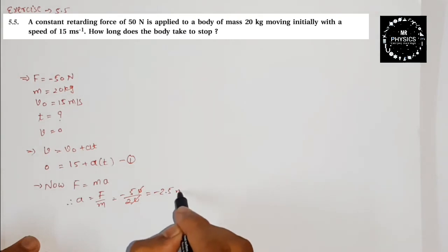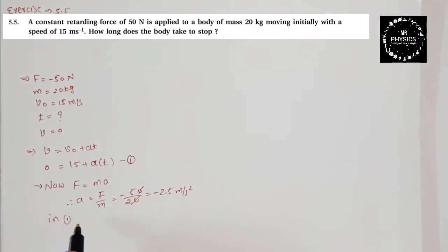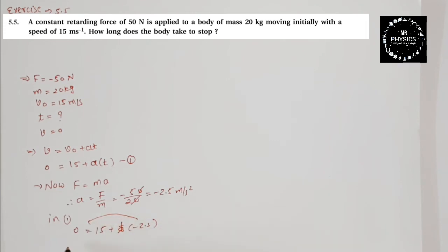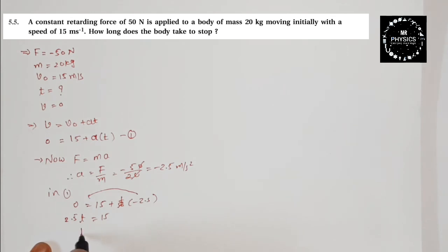Using equation v = v₀ + at, we substitute: 0 equals 15 plus (minus 2.5) into t. Bringing the 2.5t to the other side: 2.5t equals 15, so t equals 15 divided by 2.5.